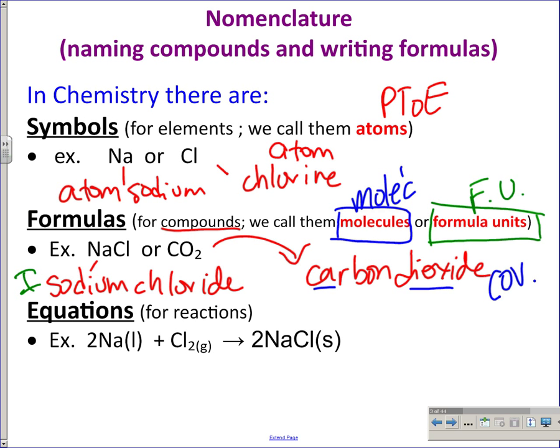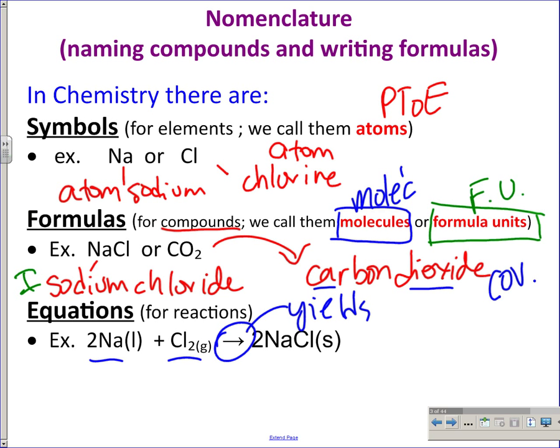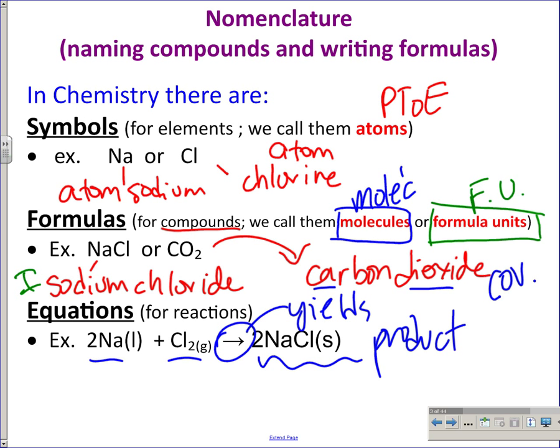Equations are just an addition of two elements or compounds together. You're going to have element or compound plus element or compound, and that arrow means yields to some product. The product will vary depending on how things react.